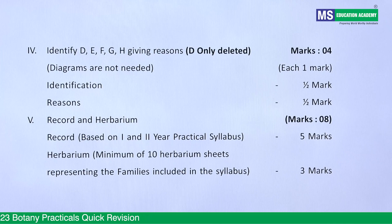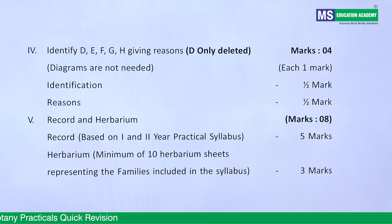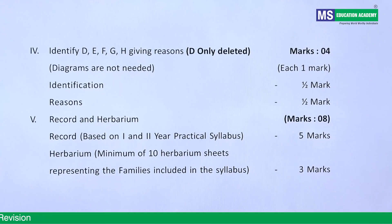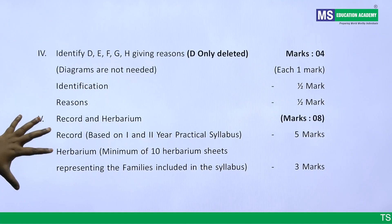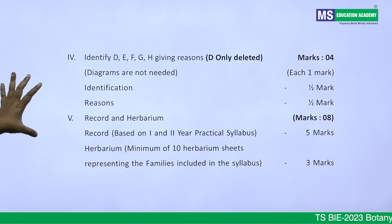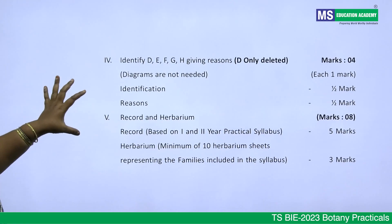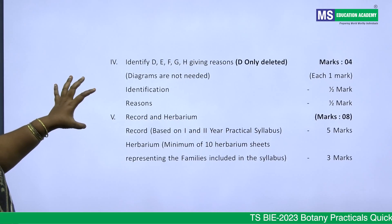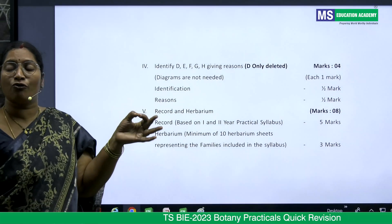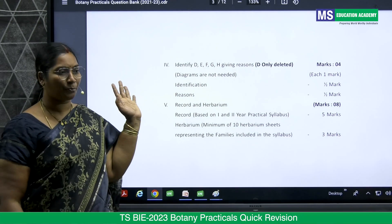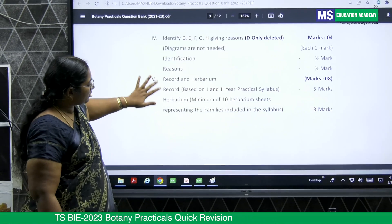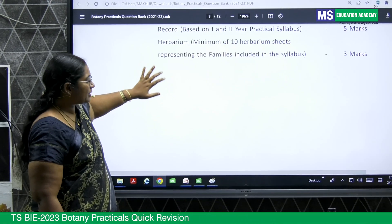The remaining part is for herbarium — five marks — and the record, previously two marks but now raised to three marks. Together herbarium and record give eight marks. The remaining twenty-two marks come from the writing and practical parts. Represent everything clearly and write whatever you know confidently.